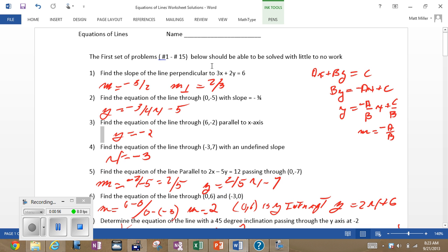So, in this instance, in this form, you don't have to change the form. You can just identify A as 3, B as negative 2, take their opposite ratio, and that's the slope. And, of course, the slope of the perpendicular would be two-thirds.